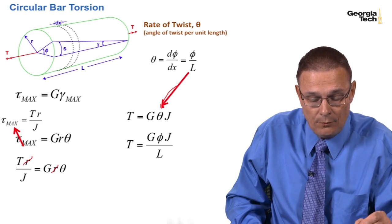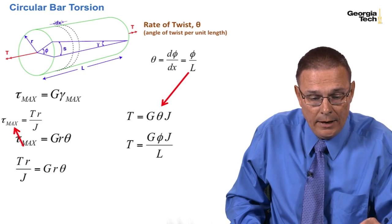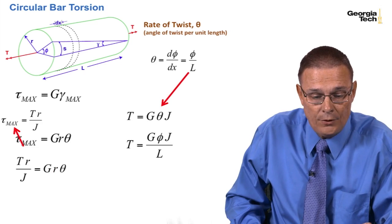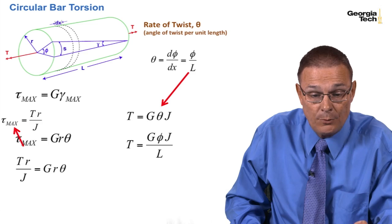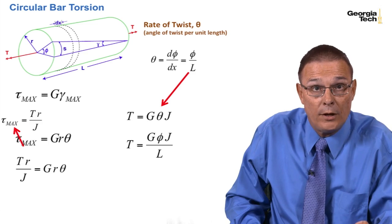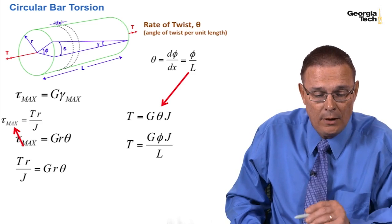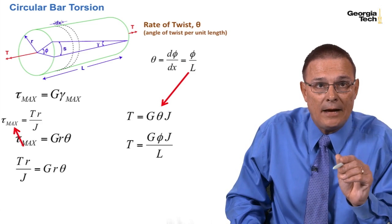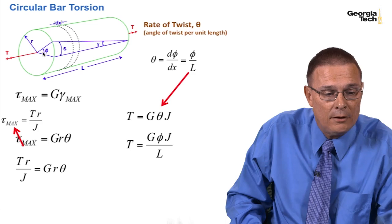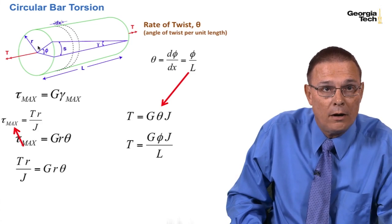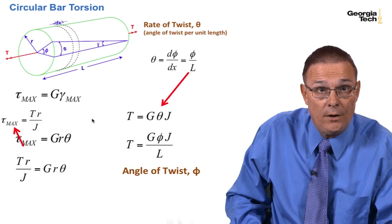And then I can substitute in for the rate of twist here. And when I do that, I get this expression. I've substituted in for theta, the rate of twist as being phi over L. And I can rearrange that now, and I can determine how much twist the bar is experiencing, phi.